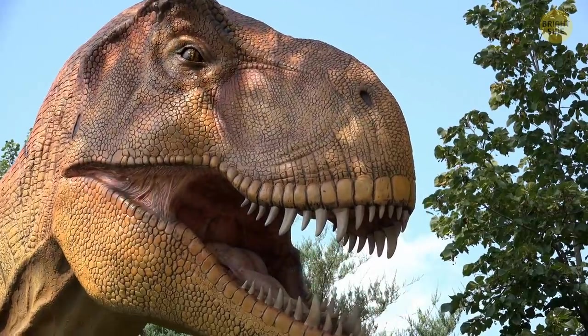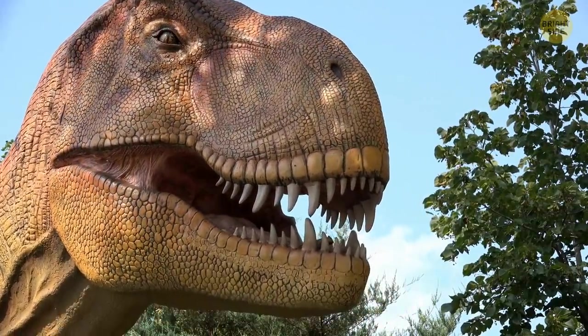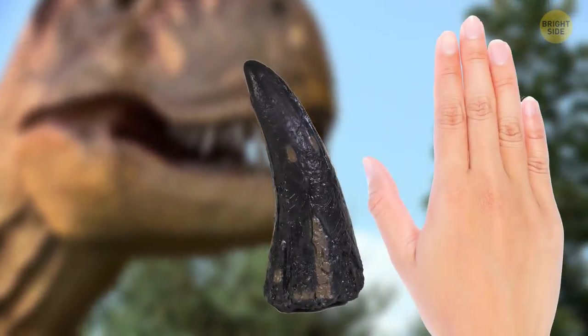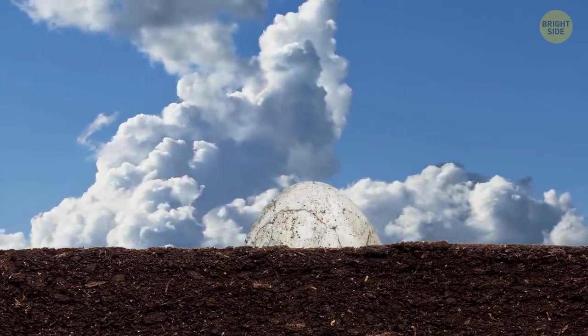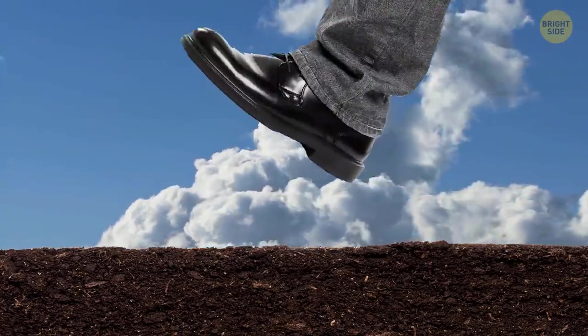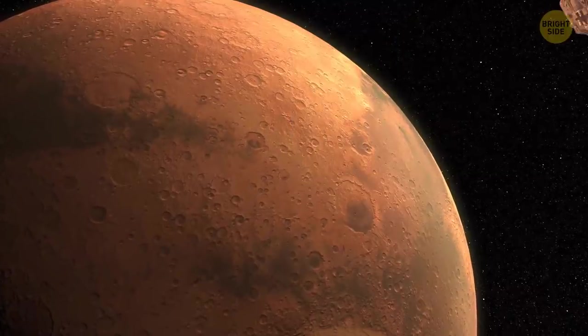Over the years, these teeth fell out to be replaced by the ones we see in films and museums, the size of a human hand. The discovery of the embryo also helped researchers calculate that the Tyrannosaurus egg was about the size of a rugby ball.